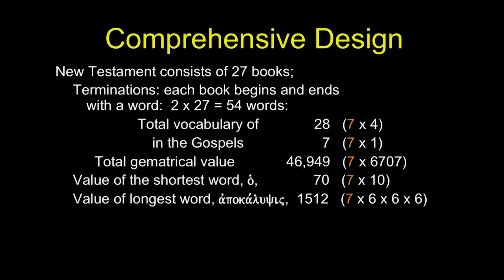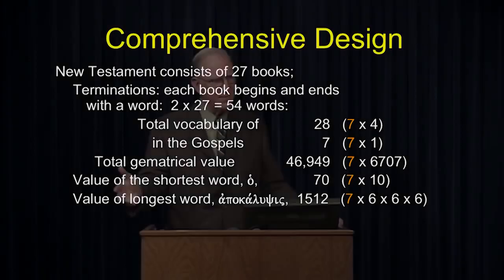The New Testament consists of 27 books, so there's an opening and closing word to each — that's 54 words total. Among those 54 words, there's a total vocabulary of 28 words that is a multiple of seven exactly. In the Gospels alone, it's a multiple of seven exactly. The total geometrical value of those words is also a multiple of seven exactly. The value of the shortest word — which is one letter — is 70, a multiple of seven. The value of the longest word is also a multiple of seven, and that longest word happens to be 'apocalypsis,' which is seven times six times six times six.